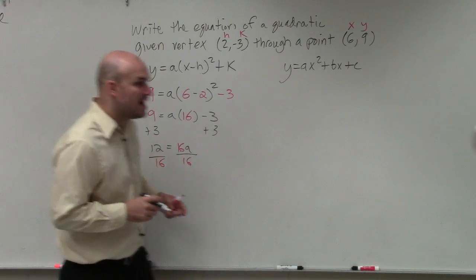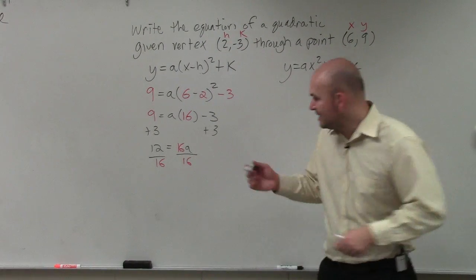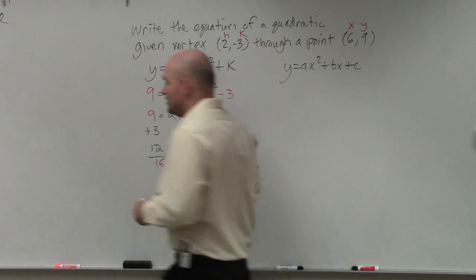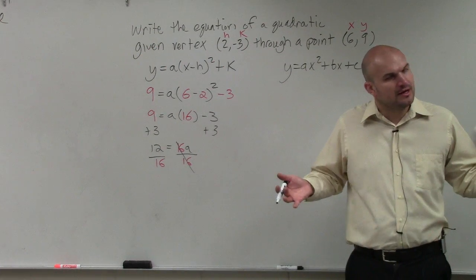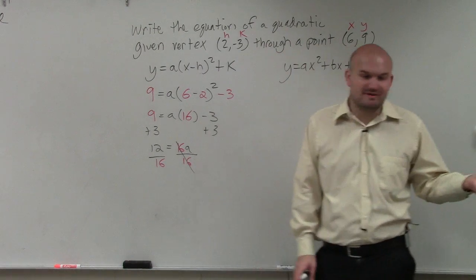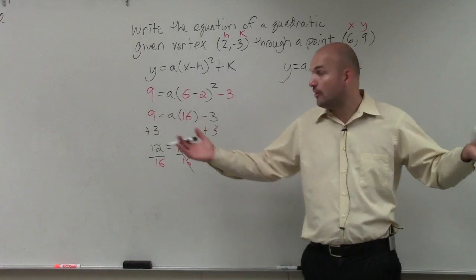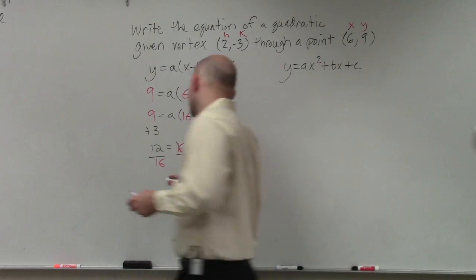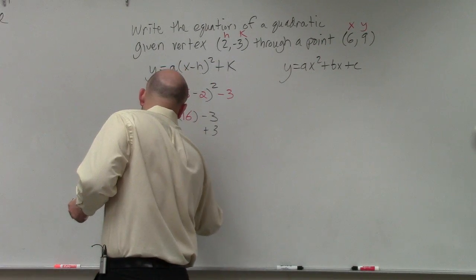But now we have a fraction. So now we know that this divides out. So now I have 12 over 16. Well, that's going to be a fraction. But I can reduce that. What number divides into 12 and divides 16? What's the largest number? 4. So that can reduce down to 3 fourths. a is equal to 3 fourths.